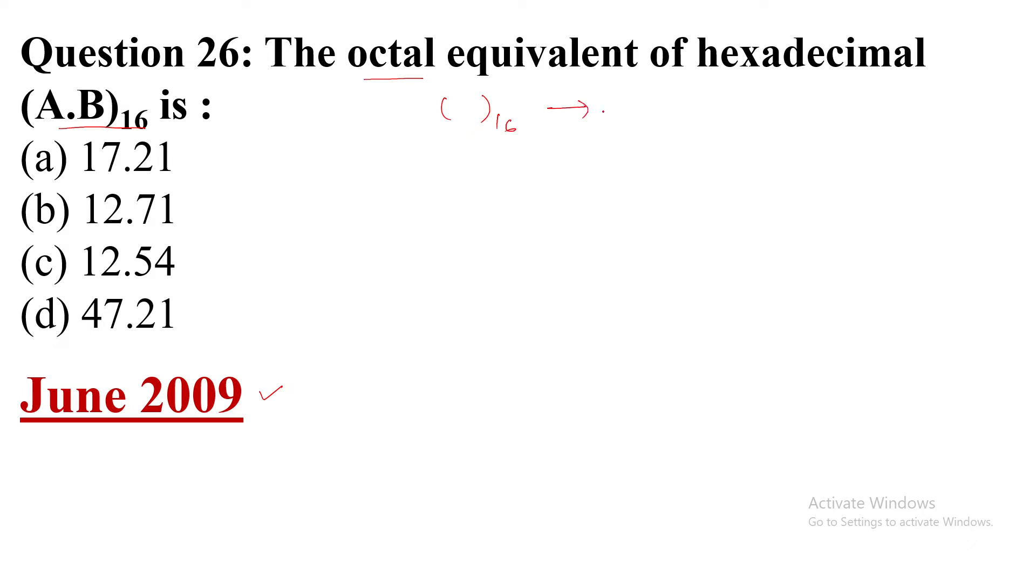First we will convert hexadecimal to binary. This is the easiest conversion, and then afterwards to octal. Why? Because of the power equivalents: 16 is 2 to the power 4, and 2 is 2 to the power 1. So one digit of hexadecimal equals four bits of binary.